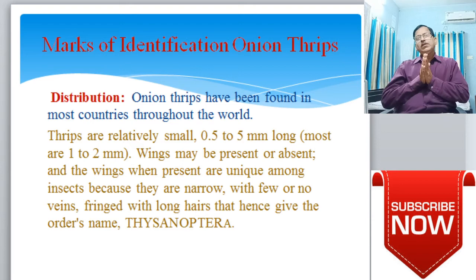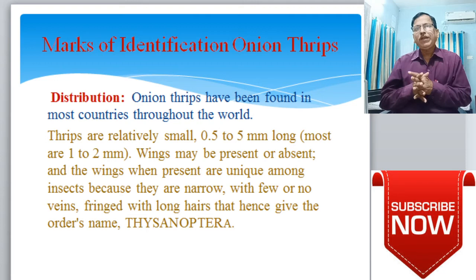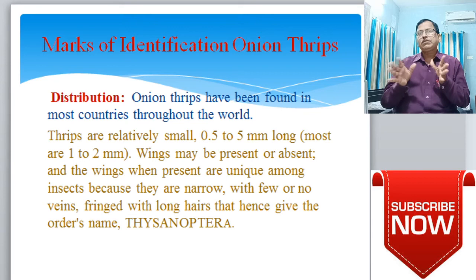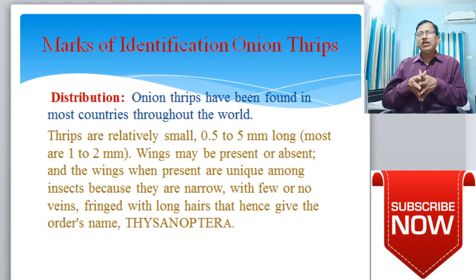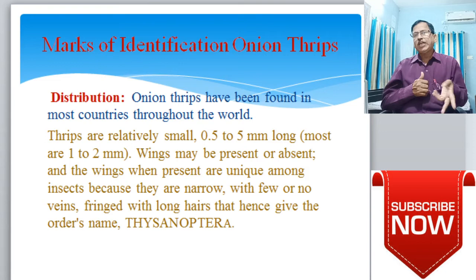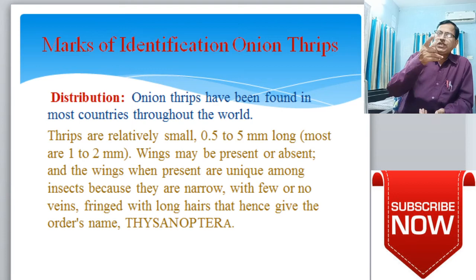From a distribution point of view, onion thrips have been found in most countries throughout the world. Thrips are relatively small — 0.5 to 2.5 mm long; most are one to two mm. Wings may be present or absent. When present, wings are unique among insects — narrow with few or no veins, fringed with long hairs, giving the order its name Thysanoptera.